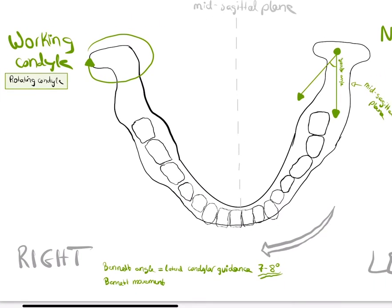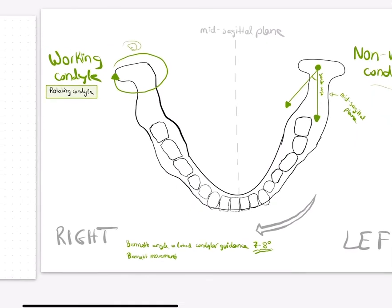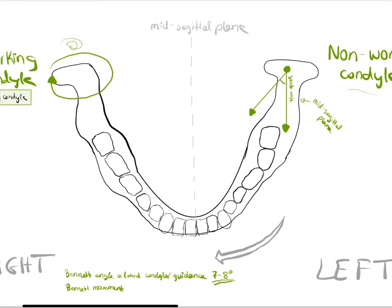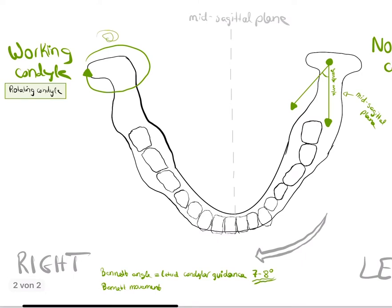It rotates in its fossa with little downward and backward movement, rotating against the superior and posterior walls of the glenoid fossa. It has laterotrusive movement because the mandible moves laterally.